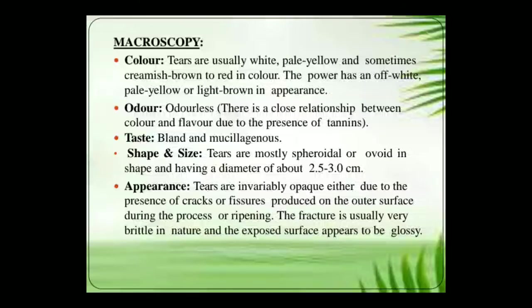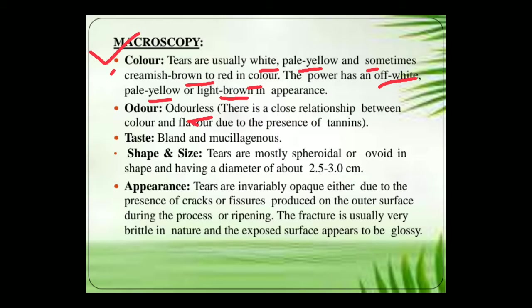Let us move into the details of the drug's description. First, we study the macroscopic characters. The colour: tears are usually white, pale yellow, and sometimes creamish brown to red in colour. The powder has an off-white to pale yellow or light brown appearance. It is odourless. There is a close relationship between colour and flavour due to the presence of tannins. The taste is bland and mucilaginous because it contains a high amount of mucilages.